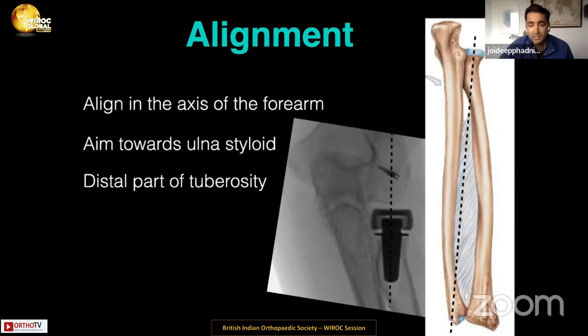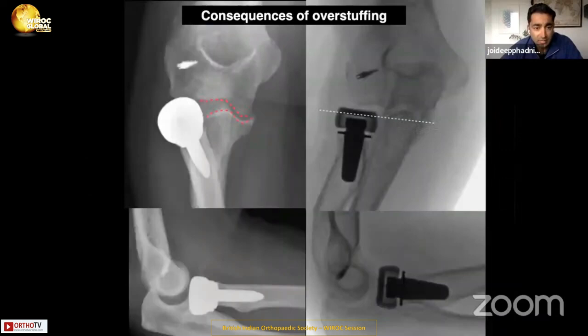Remember alignment: the radial neck and head alignment is not collinear to the shaft axis. It should be aligned with the axis of forearm rotation, which lines up with the radial tuberosity, the distal aspect, and the ulnar styloid. Overstuffing results in jacking out of the lateral joint line and persistent subluxation.